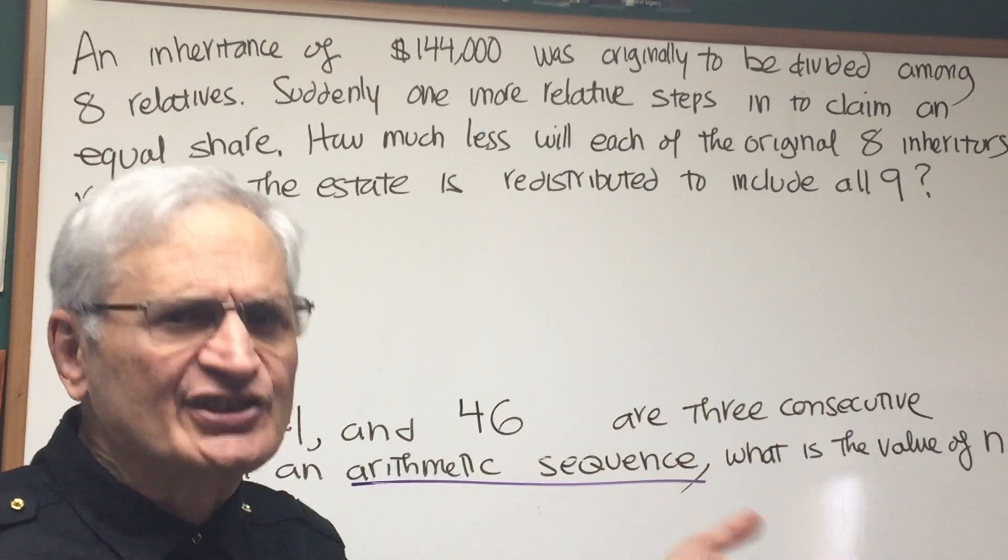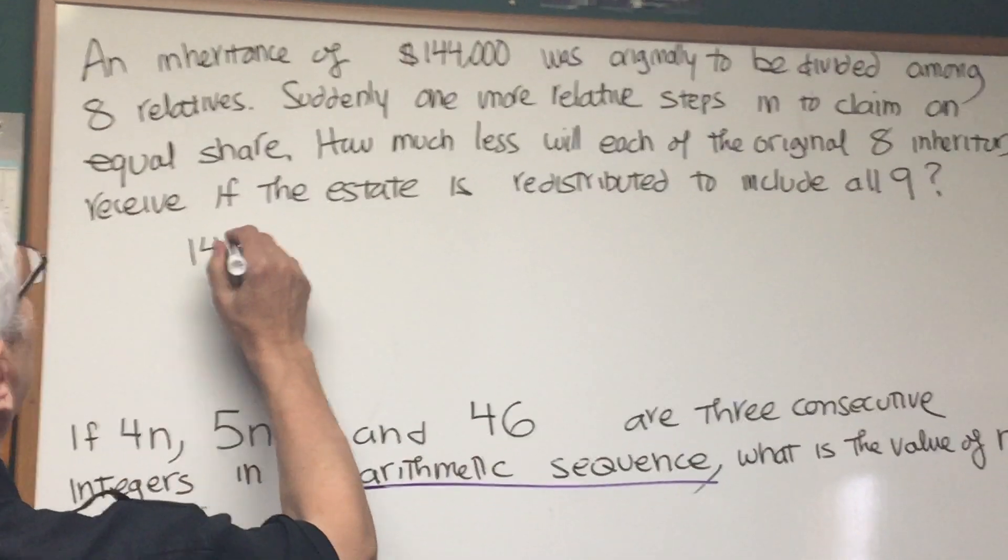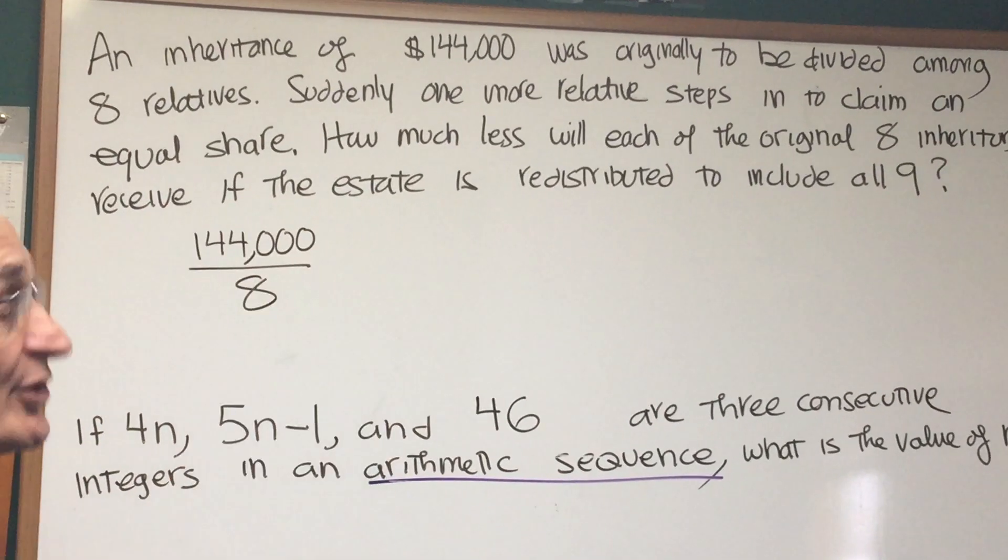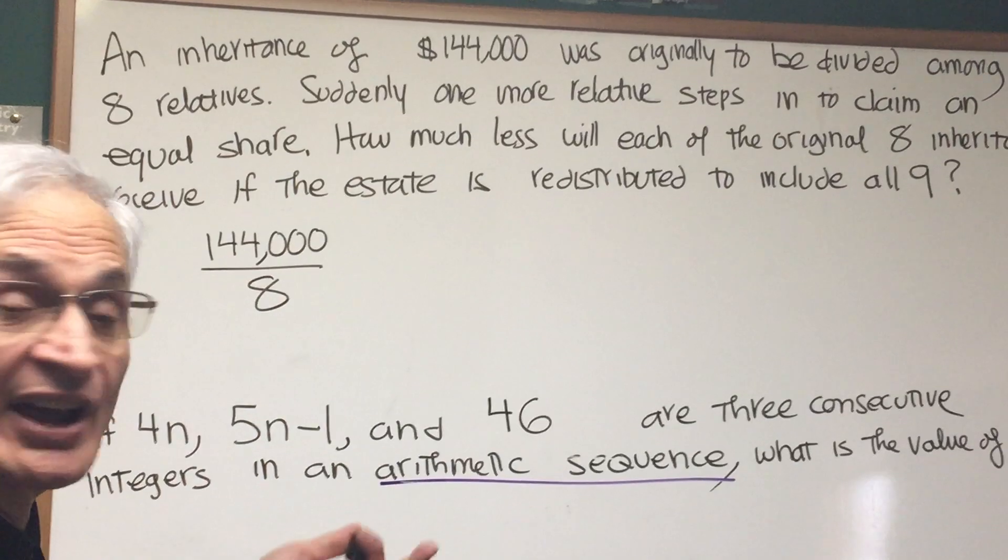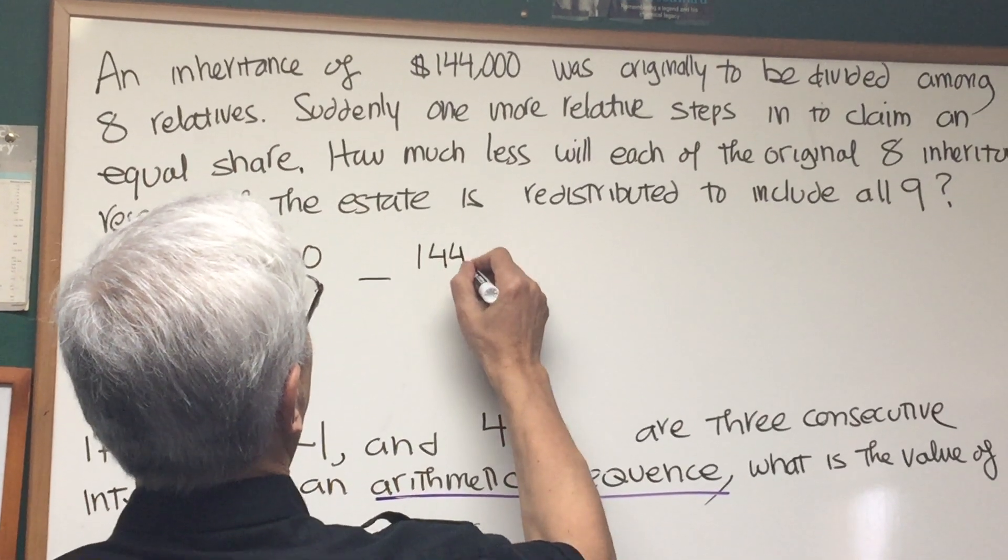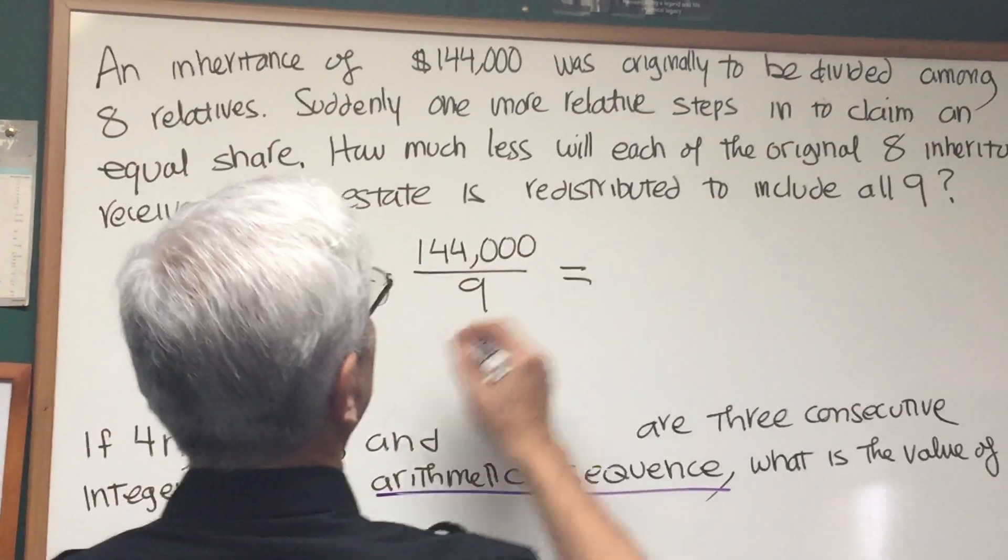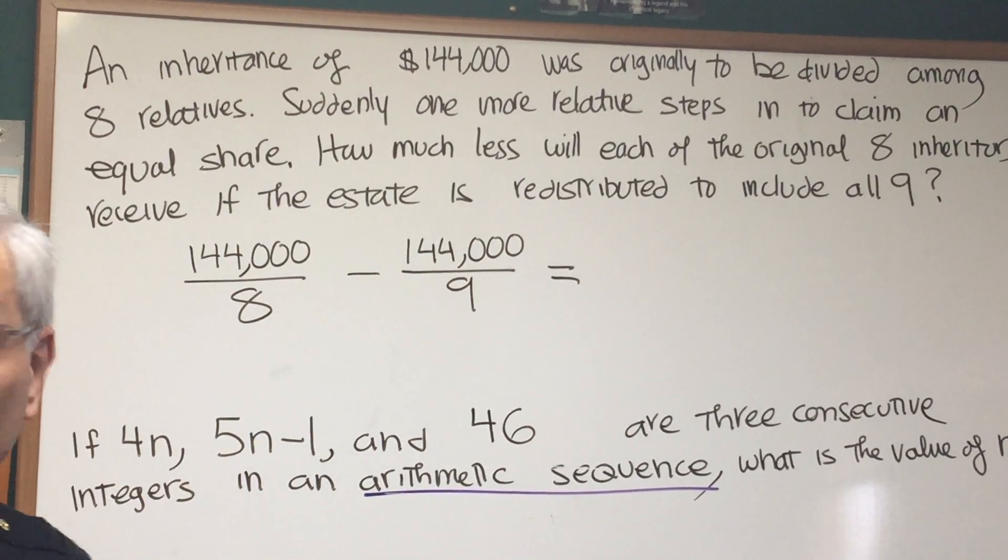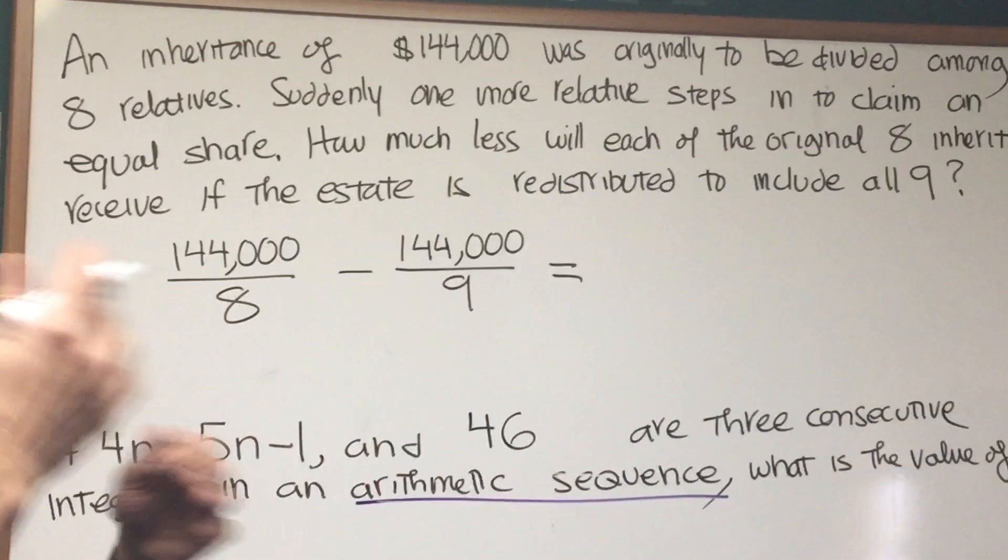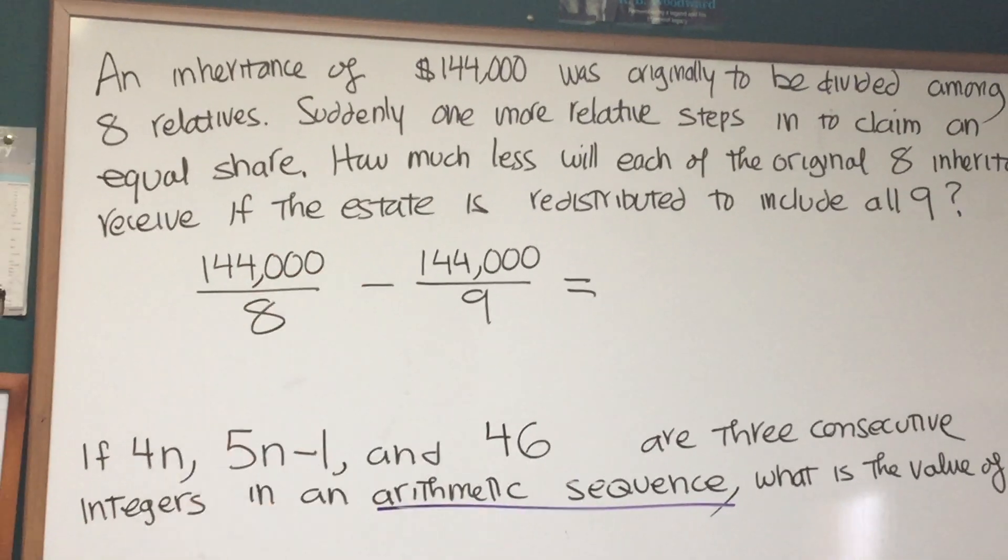Well, actually, it's an easier problem than it may look. First, let's find out $144,000, how much each of the original eight inheritors would have received had the ninth not been introduced. Then we're going to calculate how much each of the nine inheritors are going to receive with all nine introduced. The difference between the two will answer the question, how much less each will receive if the ninth one is included. So now we're going to reduce these two fractions.